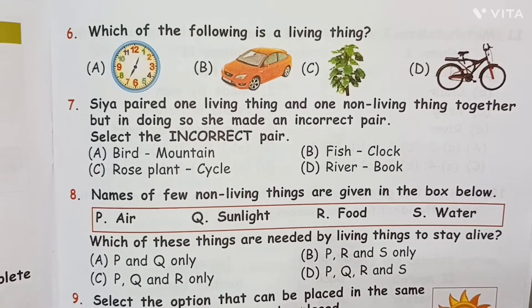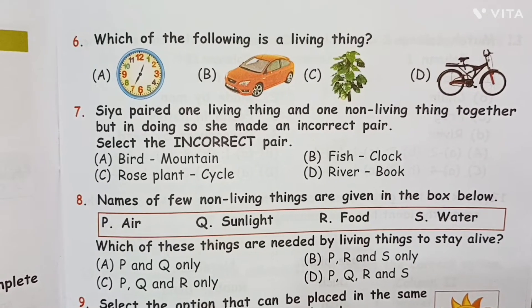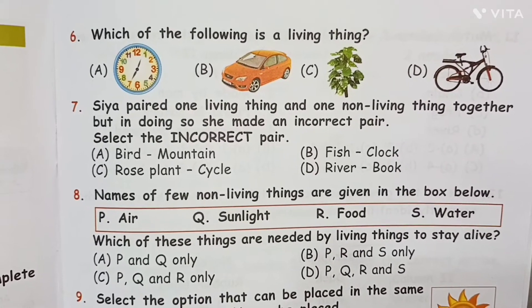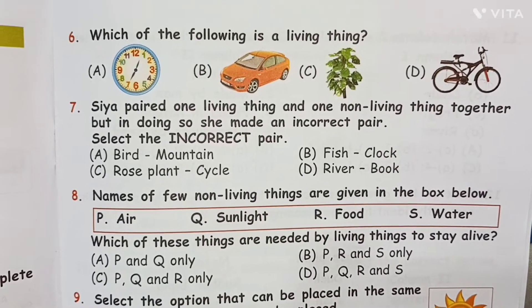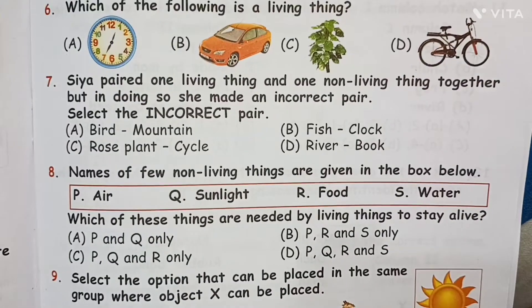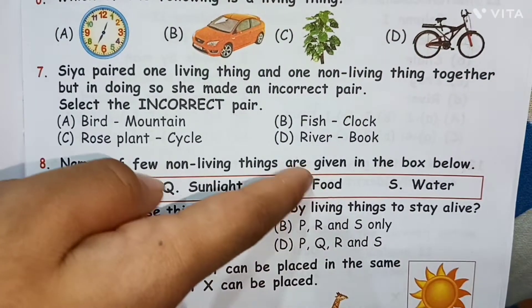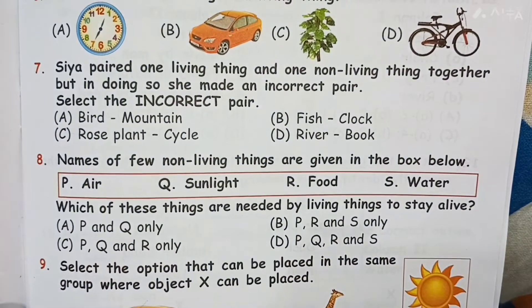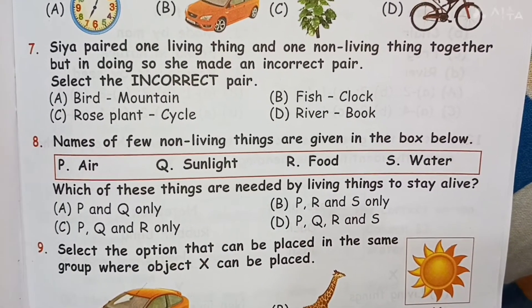Question 7: Sia paired one living thing and one non-living thing together but made one incorrect pair. The options are: A — bird, mountain; B — fish, clock; C — rose plant, cycle; D — river, book. The answer is option D, because river and book are both non-living things, so it is not a correct living/non-living pair.